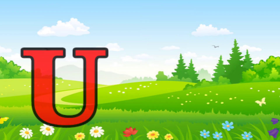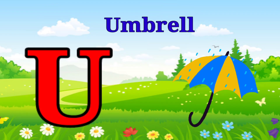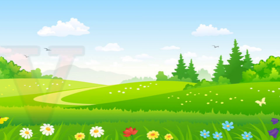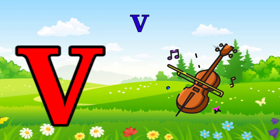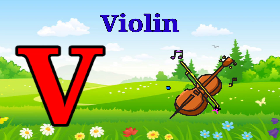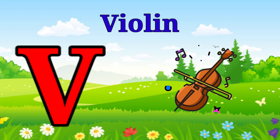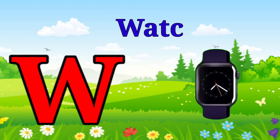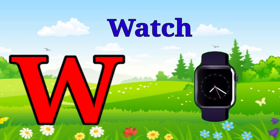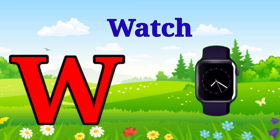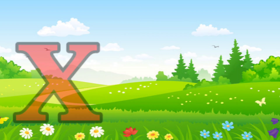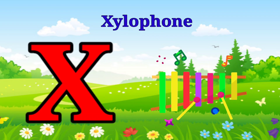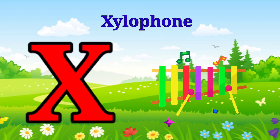U is for umbrella, u-u-umbrella. V is for violin, v-v-violin. W is for watch, w-w-watch. X is for xylophone, z-z-xylophone.